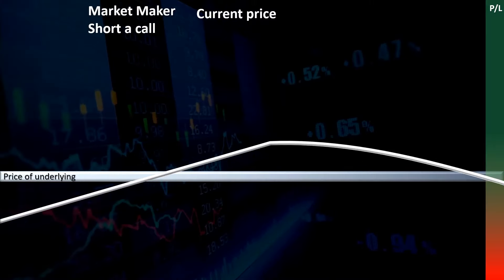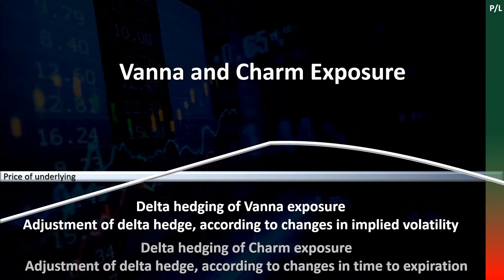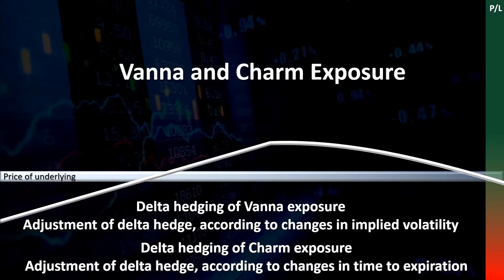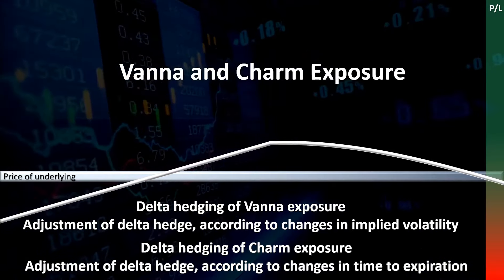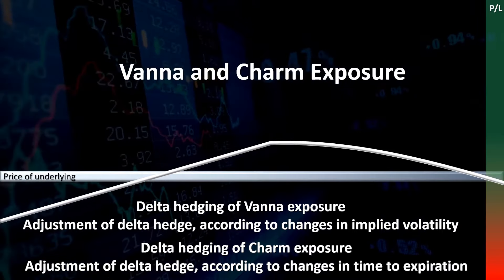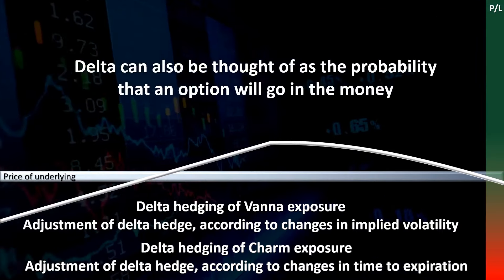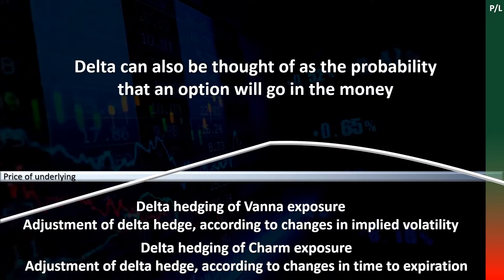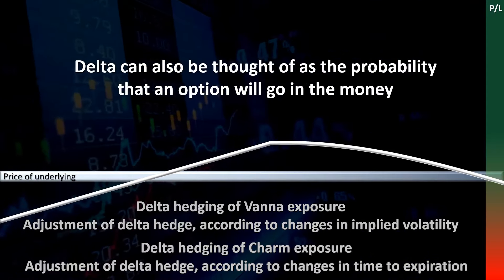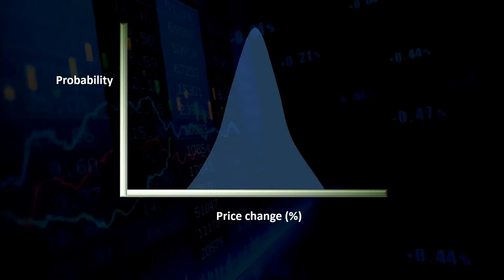However, the delta of an option can change independently of prices of the underlying. This can be due to changes in implied volatility or time, which create Vanna and Charm exposures for market makers respectively. To understand Vanna and Charm, it may be easier to not think of delta as the current slope of an option's P&L profile, but to instead think of delta as the probability that an option will go in the money.